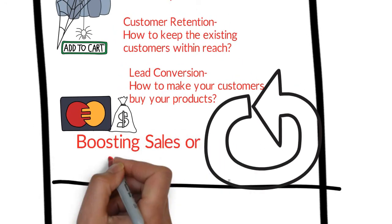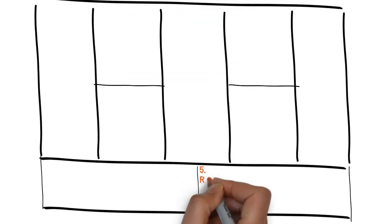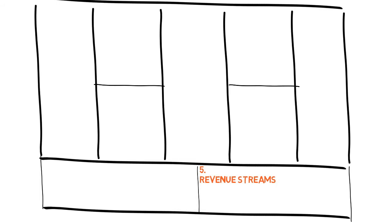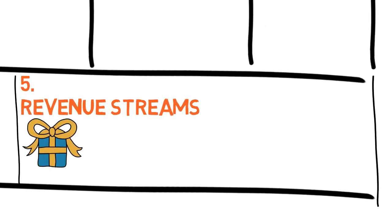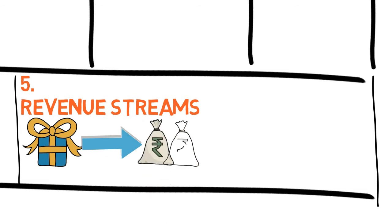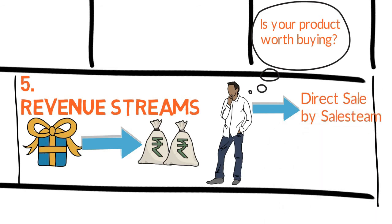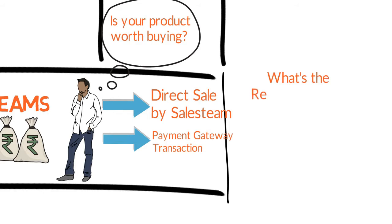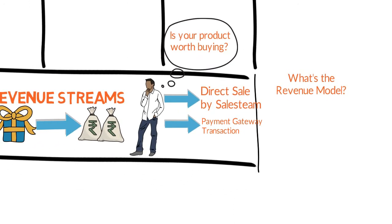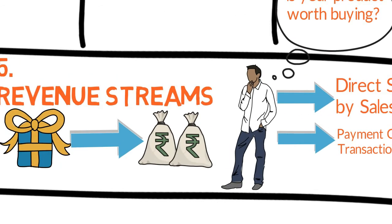This is called boosting sales or upselling. The fifth is revenue streams. Revenue streams means how do you actually make money from your product or services — what value the customer will pay for. Is it a direct sale or a payment gateway transaction? Is it a freemium pattern, a premium model, or something else like licensing or a subscription model? You should always remember that it is not about pricing tactics — it's about how you will make money and what model will generate money for you.